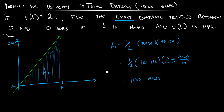The key takeaway is that we have a few methods of approximating total change from rates of change. But when a problem says the word exact, what we need to do is find areas underneath the curve using exact methods — using shapes.